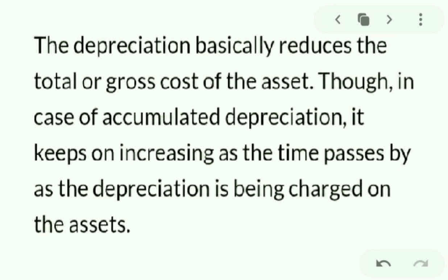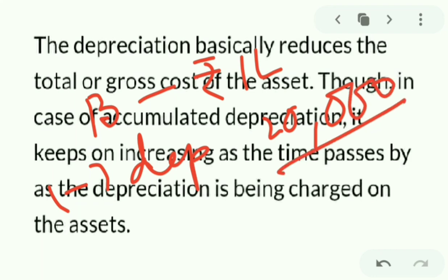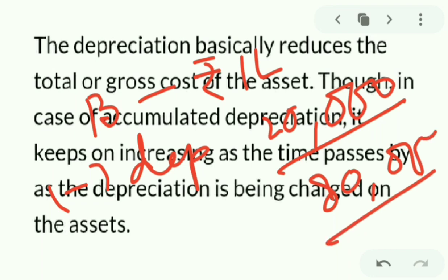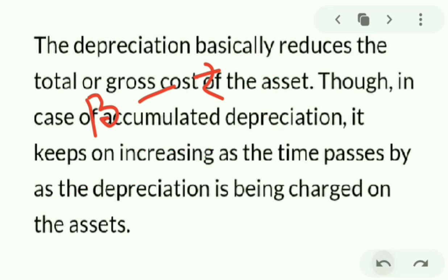Depreciation basically reduces the total or gross cost of the asset. As the fixed cost of the asset is given, depreciation is lessened from that. For example, if you purchased a building at a cost of rupees 1 lakh, and the depreciation is 20,000, then 1 lakh minus 20,000 gives us 80,000, which is the actual cost after depreciation.